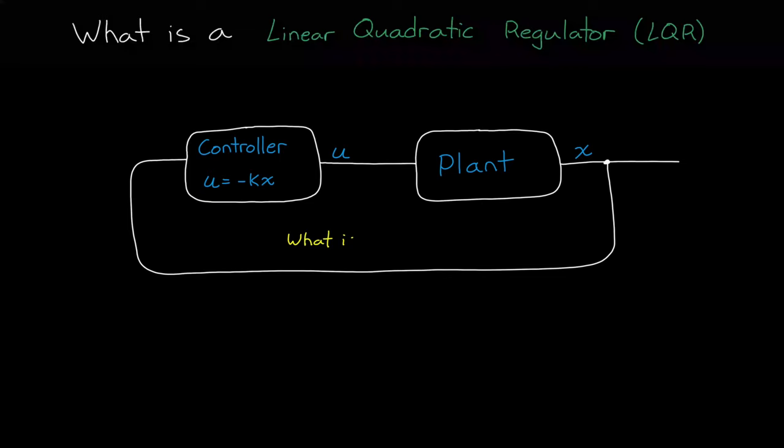And so the question is, what are the optimal values of k so that the system behaves the way we want? And one way to solve this is with a linear quadratic regulator.